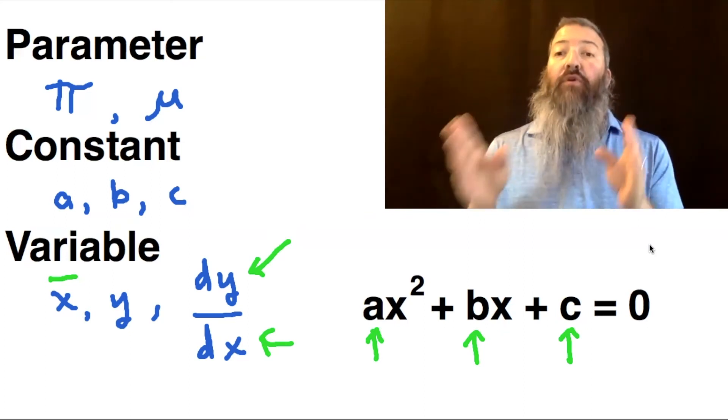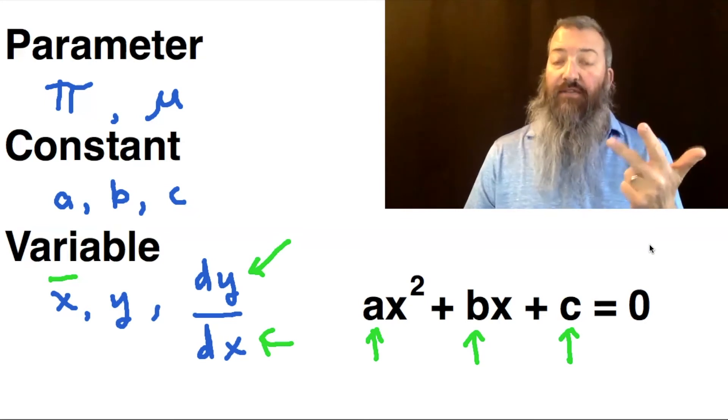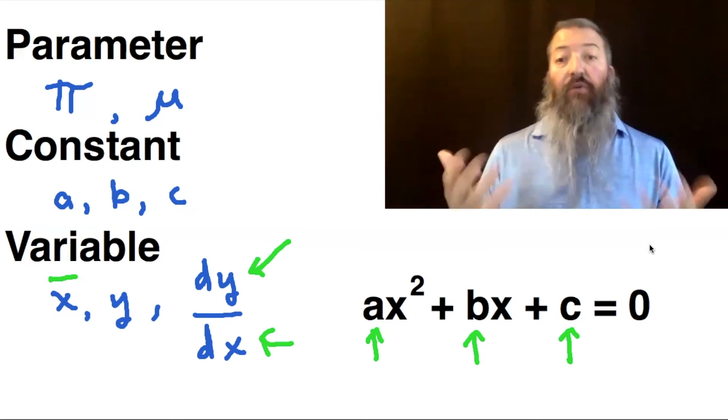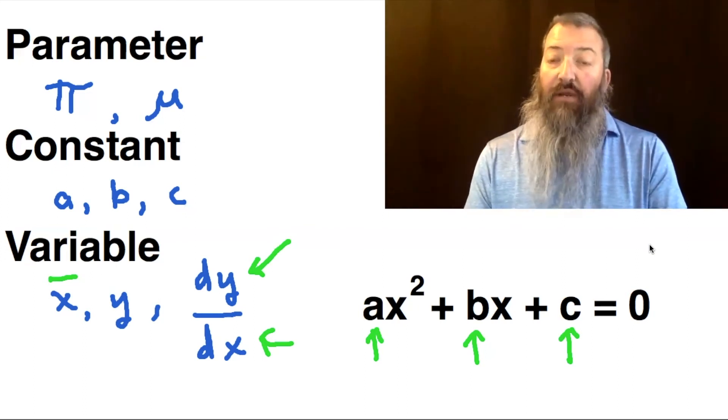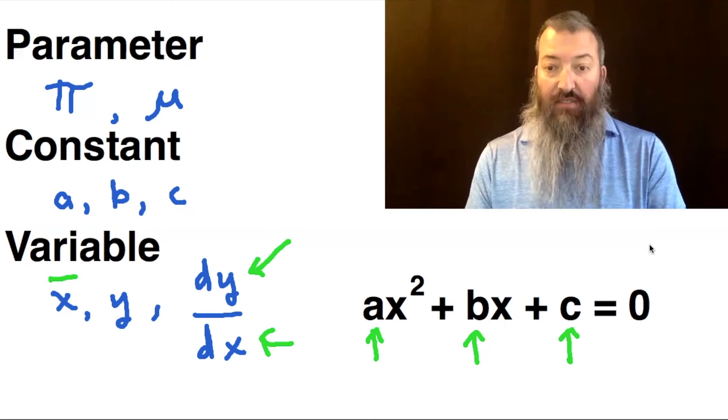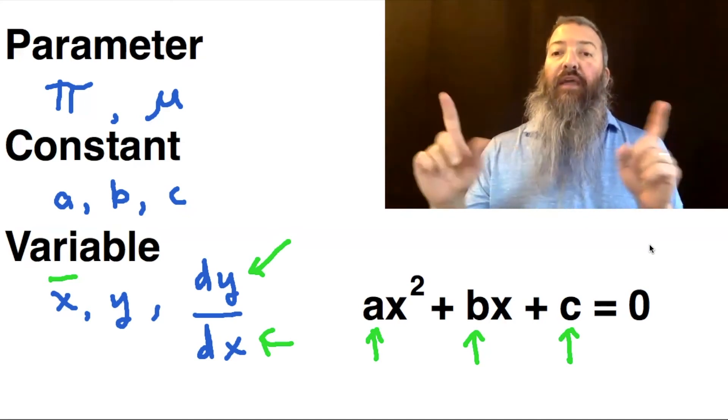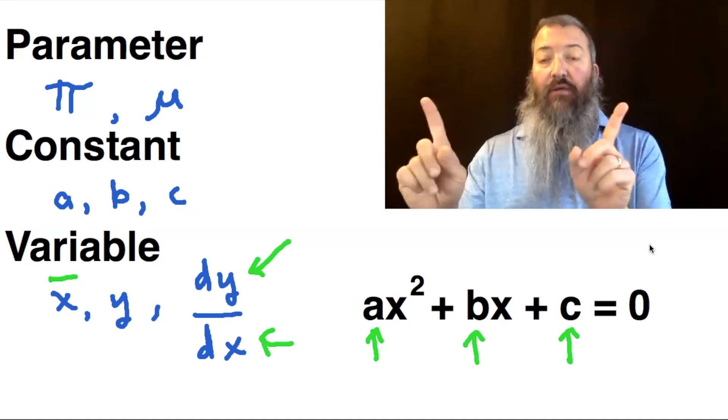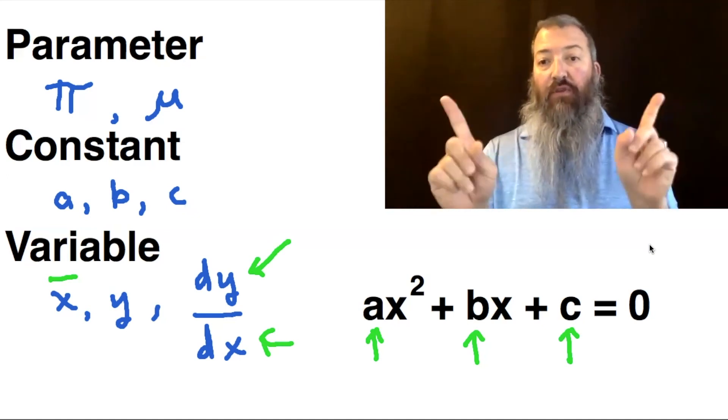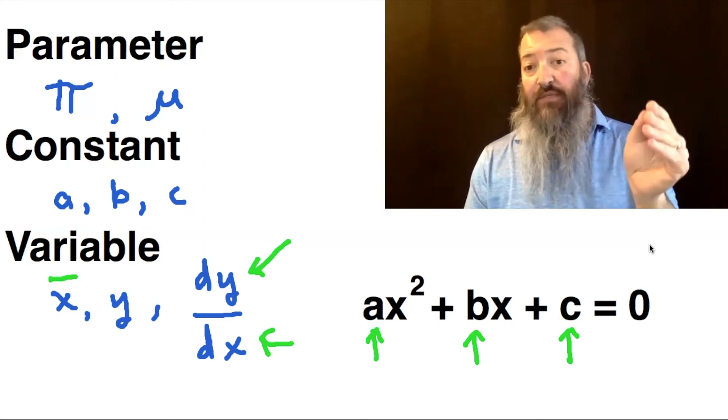However, the parameters a, b, and c, the constants that would be given to us, for example, this might be 3x squared plus 2x plus 1 equals zero. That determines where the parabola is on the number line and where those roots are going to cross the x axis. And in this particular case,